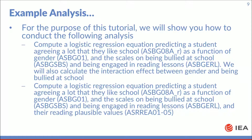For the purpose of this tutorial, we will show you how to conduct the following analyses. First, compute a logistic regression equation predicting a student agreeing a lot that they like school as a function of their gender and their scales of being bullied at school and being engaged in reading lessons. We will also calculate the interaction effect between gender and being bullied at school. Then, we will compute a logistic regression equation with the same predictors plus the reading plausible value.